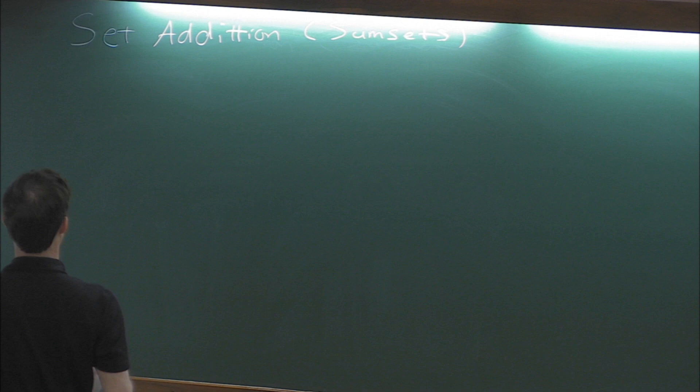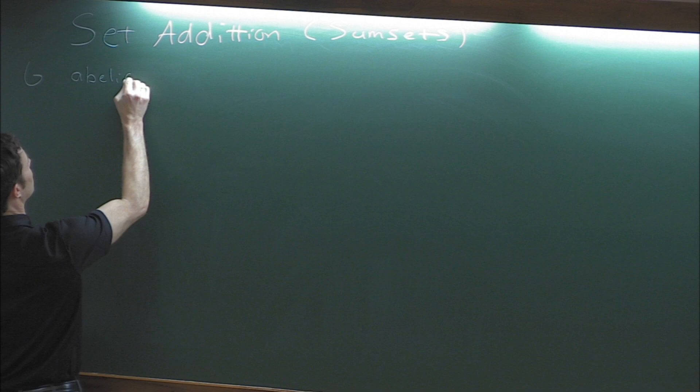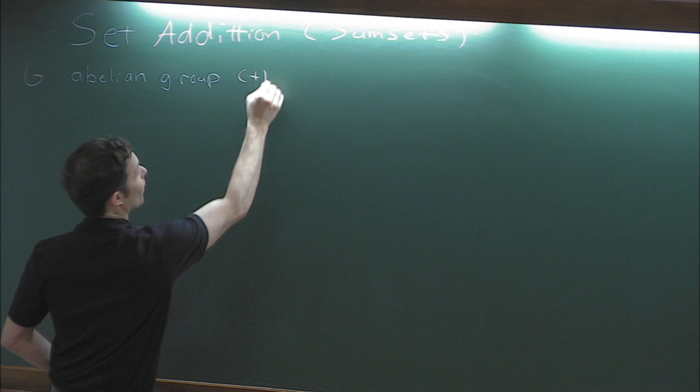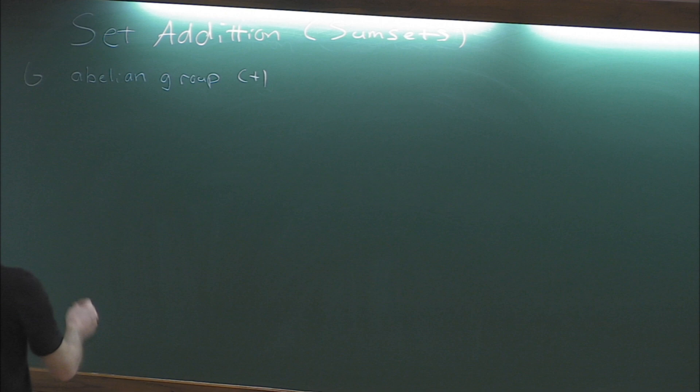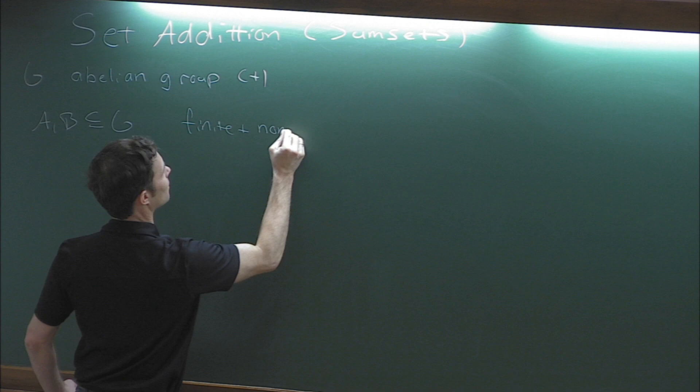We'll try to keep the notation a little consistent. G is going to be an abelian group, written additively, so our operation is going to be plus. We don't study the actual abelian group itself - we're interested more in the subsets of this group. So A and B are going to be finite, non-empty subsets.